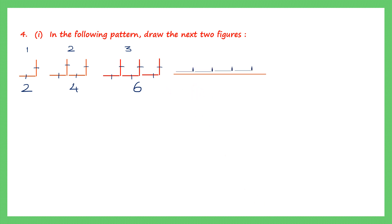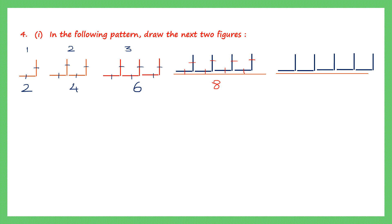Let's draw the next figure and count: 1, 2, 3, 4, 5, 6, 7, 8 — we have 8 matchsticks in figure 4. Then figure 5: counting 1 through 10 — we have 10 matchsticks. So we complete the pattern by observing the first few figures already given to us.